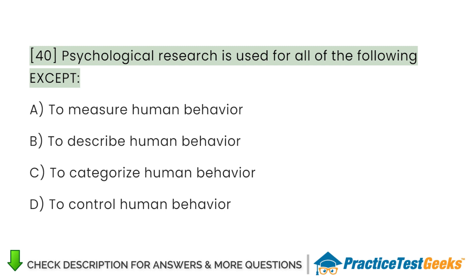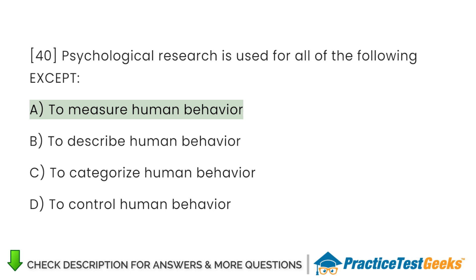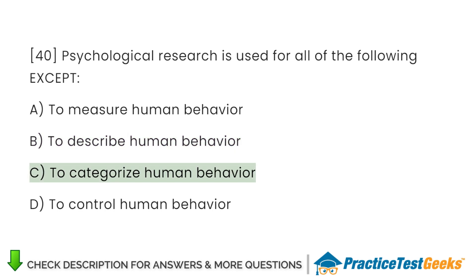Psychological research is used for all of the following except: A. To measure human behavior B. To describe human behavior C. To categorize human behavior D. To control human behavior